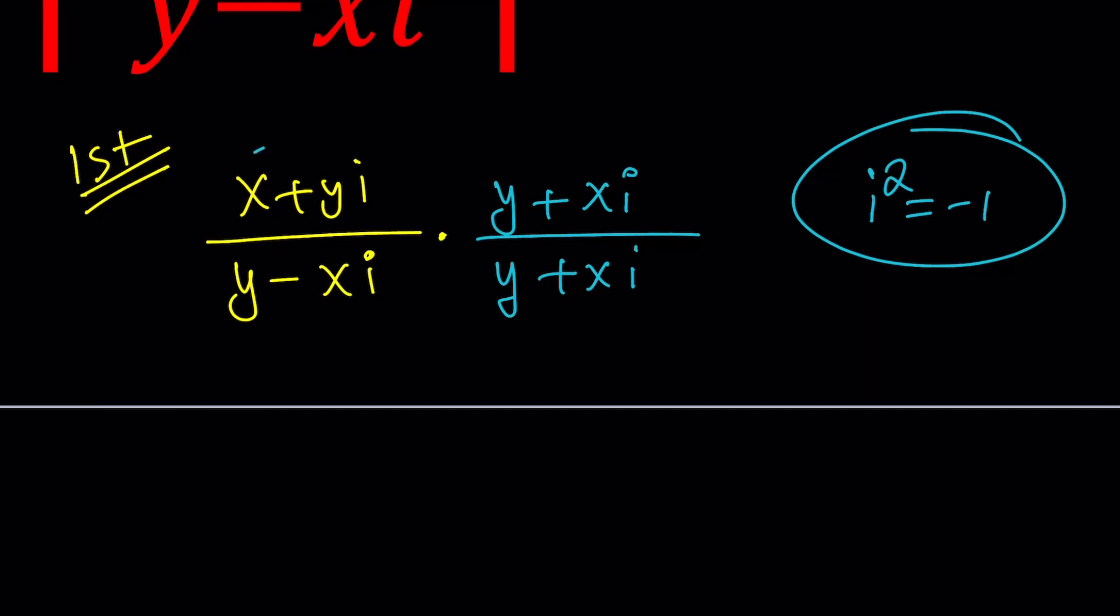So x times y is xy, plus x times xi is going to be x squared i, and then yi times y is going to be y squared i, and then yi times xi. This is the most important part when you multiply the two i's. You're going to get i squared, which is negative one, so that's going to give you minus xy. In other words, you multiply the imaginary parts and just change the sign. Make sense?